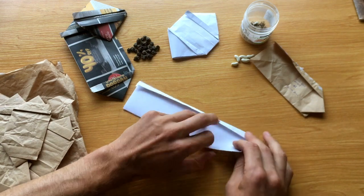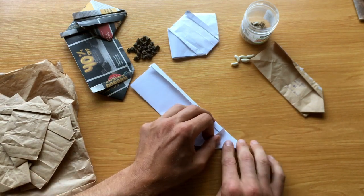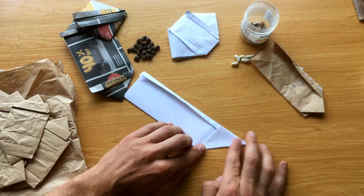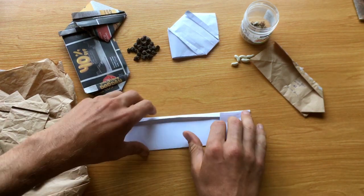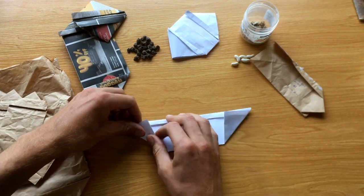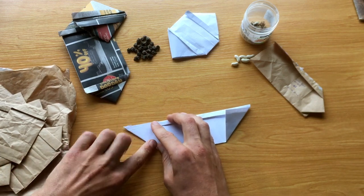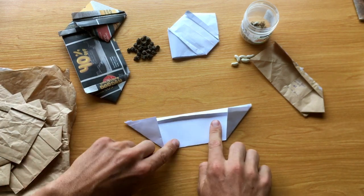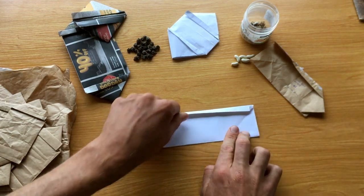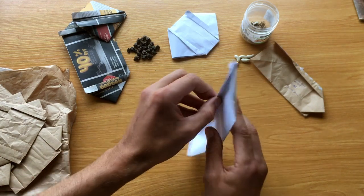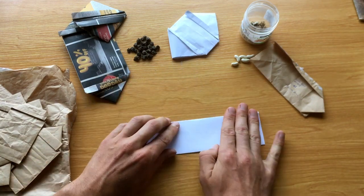Next you'll fold the bottom corner like so. Do the same thing on the opposite side like so. Then you unfold each of the sides and then you flip the paper over to the other side.